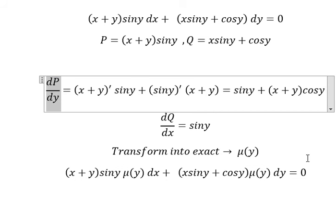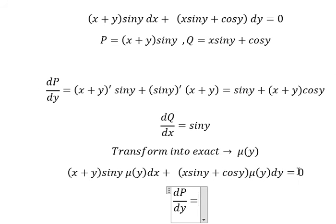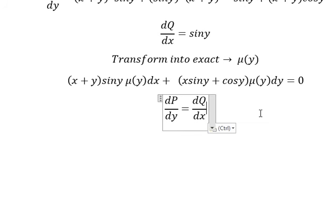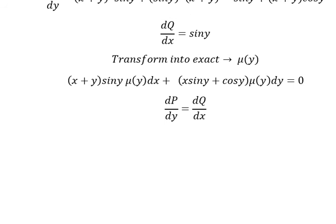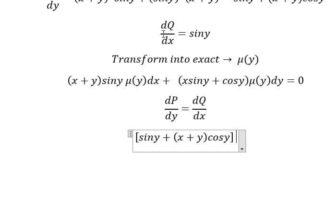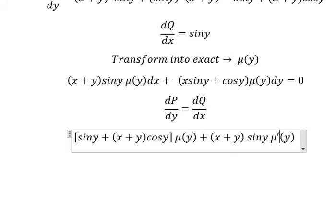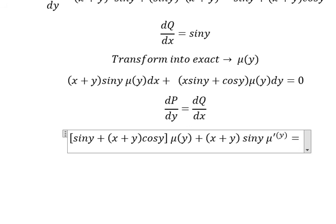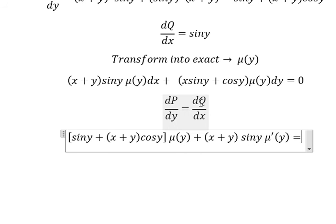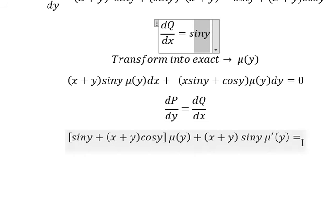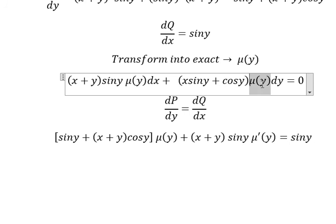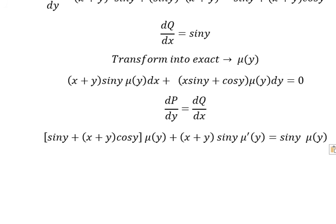We want the partial derivative of the new P with respect to y to equal the partial derivative of the new Q with respect to x. Setting up the equation for μ(y), we simplify the left side and the right side of the resulting expression.